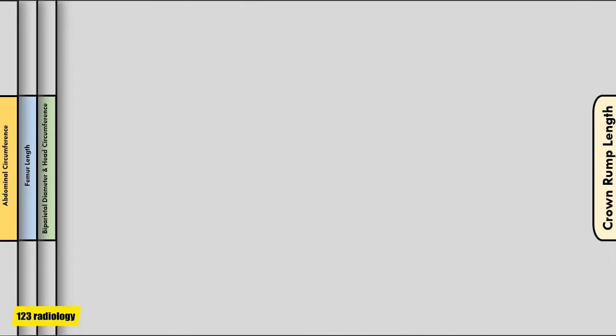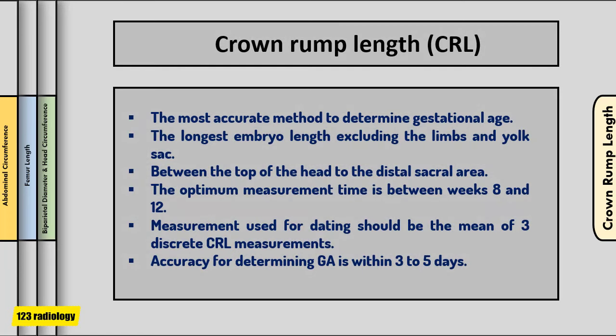The first trimester crown rump length is the most accurate method to determine gestational age, and once established should not be changed. Crown rump length is defined as the longest embryo length excluding the limbs and yolk sac — the measurement between the top of the head to the distal sacral area. The optimum measurement time is between weeks 8 and 12, when crown rump length is above 10 millimeters. The measurement used for dating should be the mean of three discrete crown rump length measurements, with accuracy within three to five days.